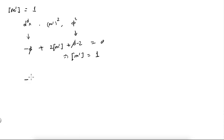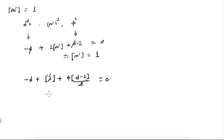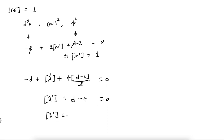From the interaction term: the measure gives minus d, lambda-prime contributes [lambda'], and phi to the four contributes 4 times (d-2)/2 = 2(d-2). Setting the sum to zero: minus d + [lambda'] + 2(d-2) = 0, giving [lambda'] = 4 minus d. If d equals 4 then lambda-prime is dimensionless, which we already knew.